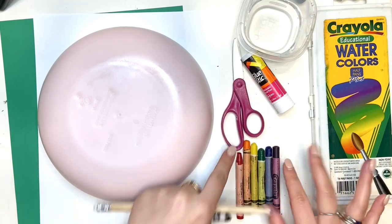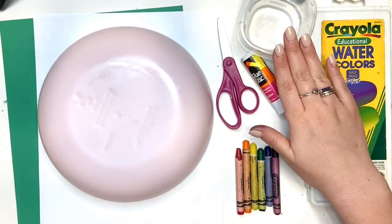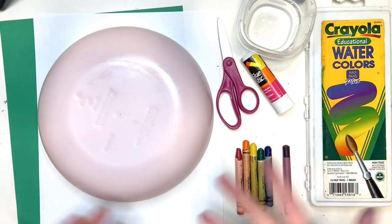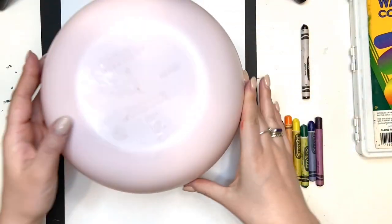You'll also want the crayons that are the color of the rainbow: red, orange, yellow, green, blue, purple, watercolors if you have them, scissors, and glue.